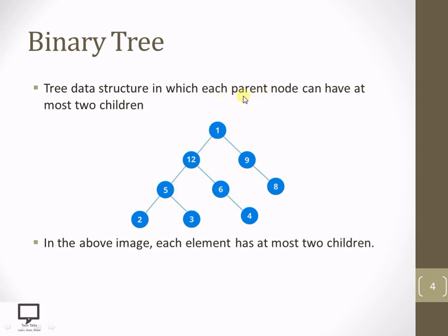Every parent may have either zero nodes as children, one single node as a single child, or a maximum of two nodes as two children to every parent node. If this condition is satisfied by any tree, then we can say that the tree is a binary tree.